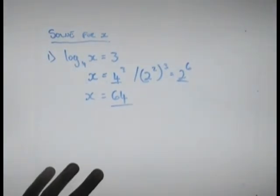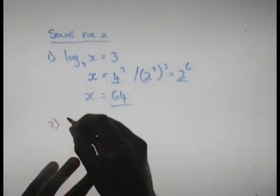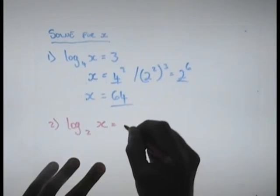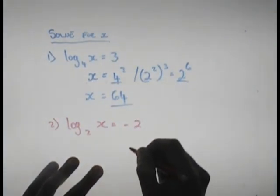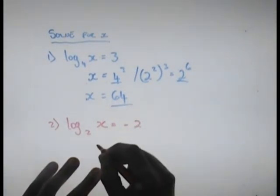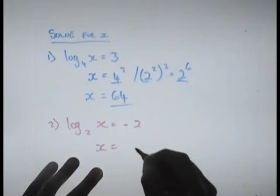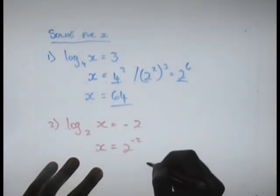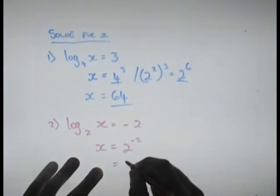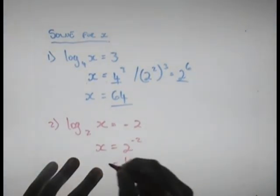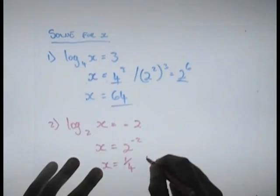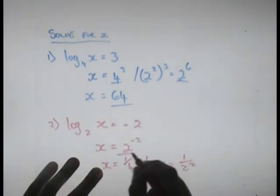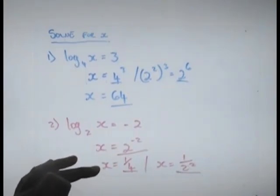The next one was: log base 2 of x equals negative 2. This means x equals 2 to the power negative 2, which equals 1 over 4, or 1 over 2 squared. Any of those three forms are correct.